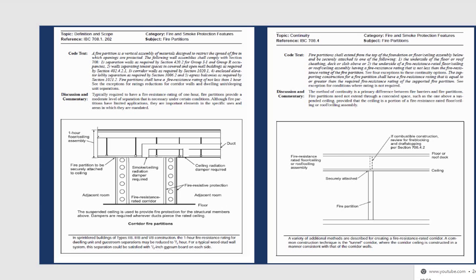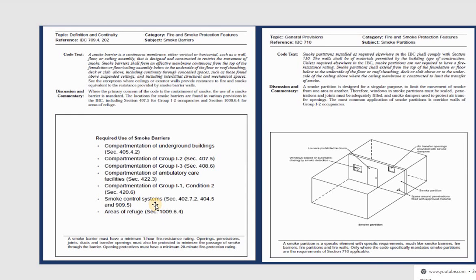In cases where you have a sprinkler system inside the building, you can reduce the required fire resistance hours. For example, if you have two or three hours of fire resistance rating in the wall, but you have a sprinkler system, you can reduce that to one or one and a half hours fire resistance wall.